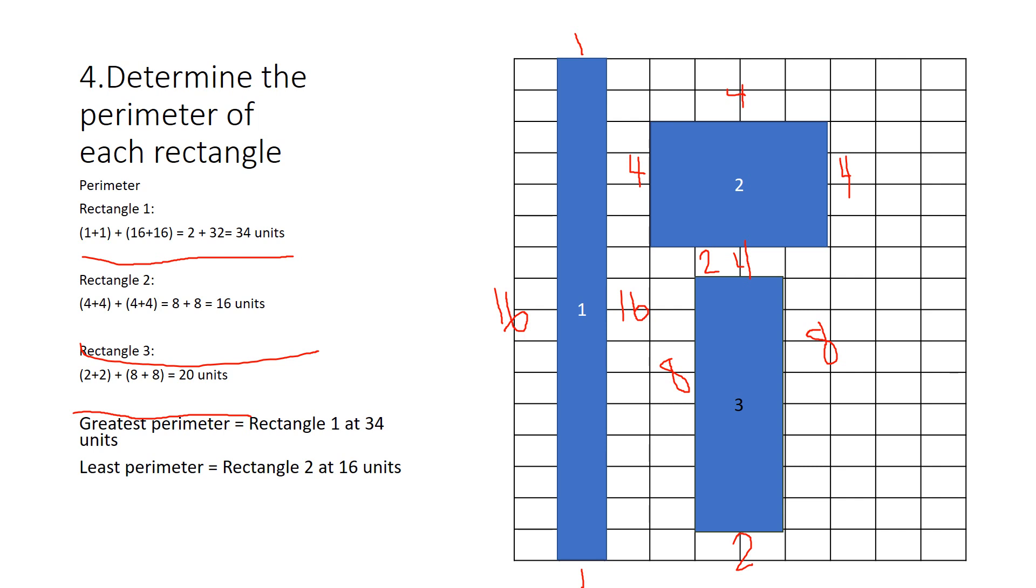So the greatest perimeter, like Miss Gere told you, is the numbers that were farthest apart. So if you remember, the one and the 16 when I drew the rainbow were farthest apart. So they have the greater perimeter, which was 34 units. The smaller perimeter was when the two numbers that we used in our equation were closer together. Well, it was the four, it was the double. So 16 units was the smallest perimeter.